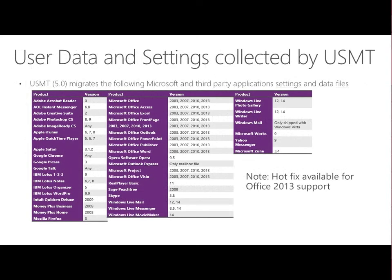With USMT 5.0, you can pick up information from a whole range of applications — not just Microsoft applications but third-party applications as well. Note there is a hotfix required to implement Office 2013 support. This is the default list, but you can certainly add to it by modifying the XML files that determine what gets captured and what doesn't. You can modify those files to pick up more information if needed, or conversely filter out information you don't want to capture.